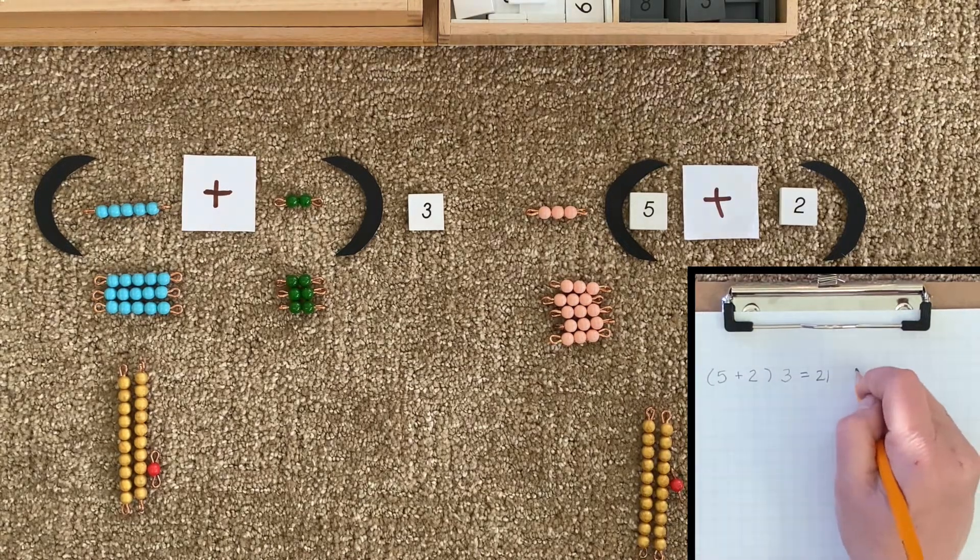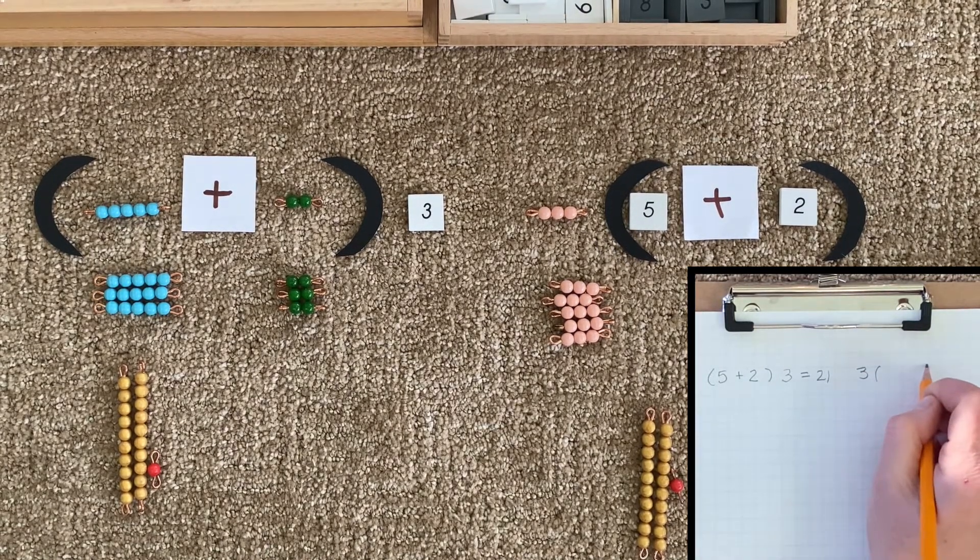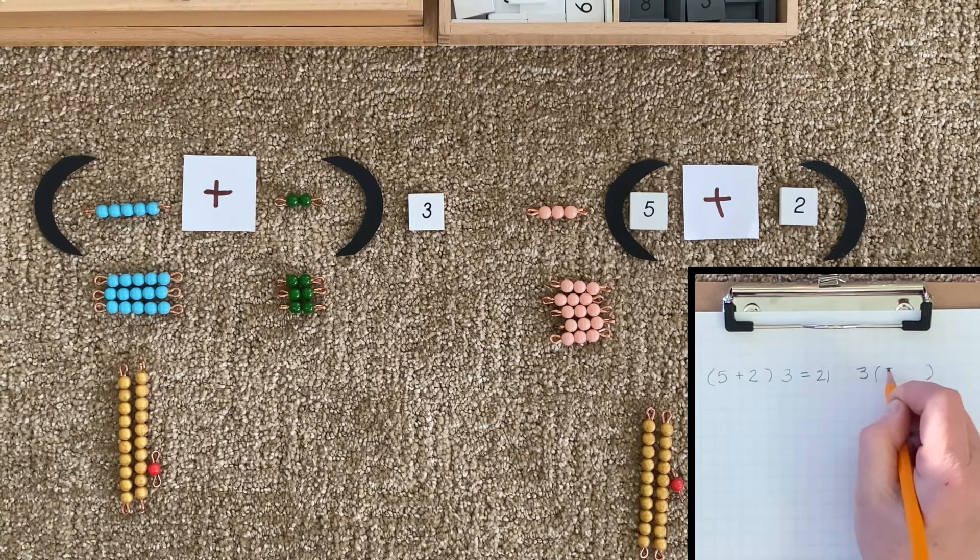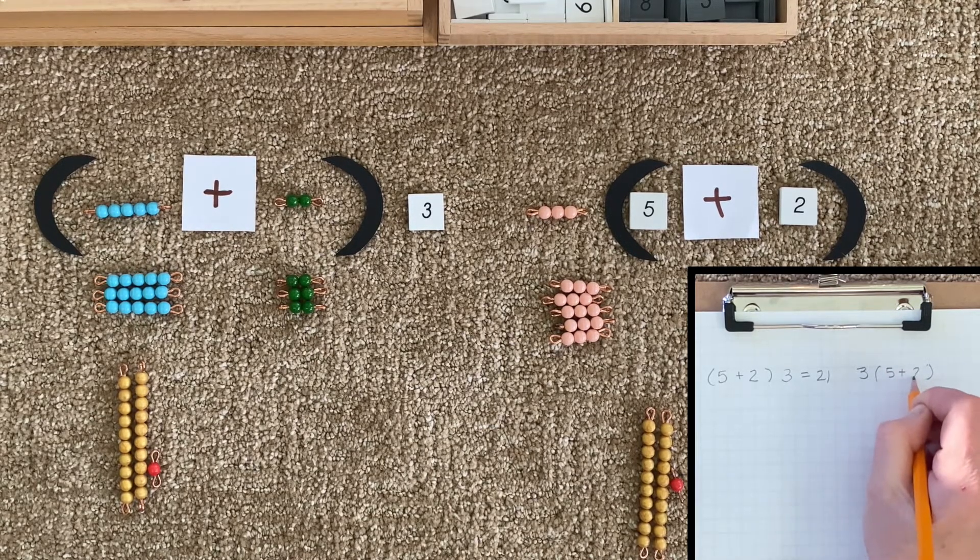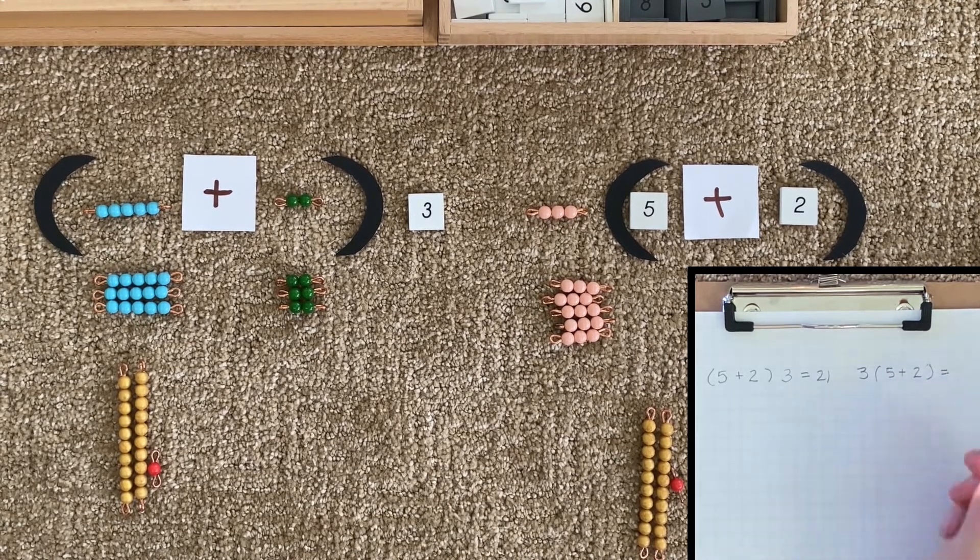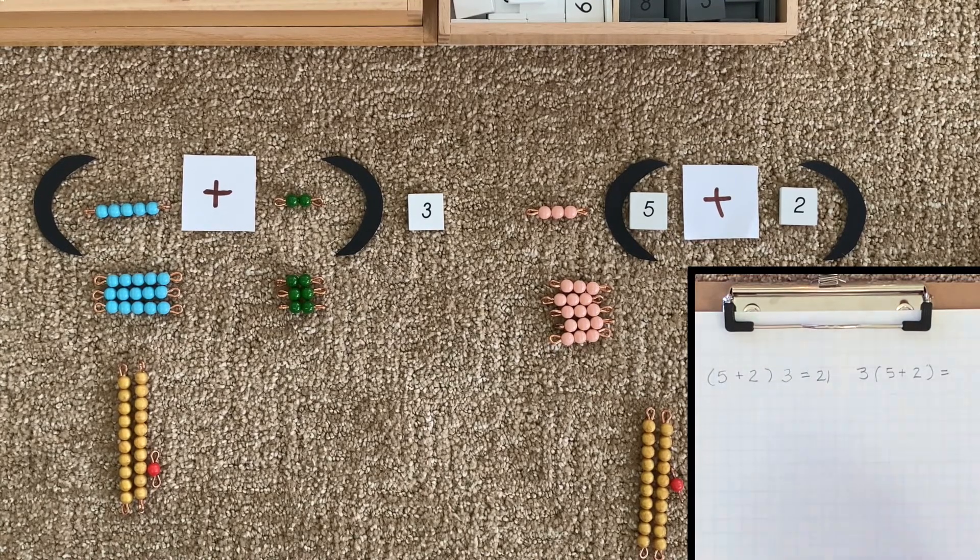And on the other side, we have one term of three and five plus two as our multiplier. And our answer again was 21.